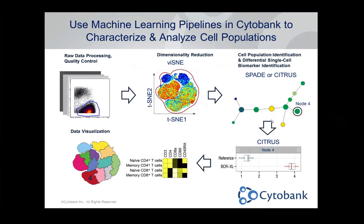After the exploratory Visne — just asking 'what's going on in my tube?' — you can move on to other algorithms in Cytobank like SPADE or Citrus. After those algorithms give you a result, you can look at a SPADE node or Citrus population either in a traditional heat map showing the phenotype, or display it back onto the Visne map for immediate context about what kinds of cells these algorithms have found.